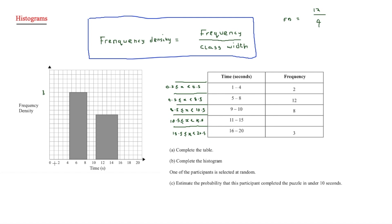Every 5 spaces equals 1 unit. Reading the histogram, the frequency density for the interval 11 to 15 is 2. So we set up the equation: 2 = f ÷ 5, where the class width is 5. Therefore f = 10. We can fill in 10 as the frequency for that interval.